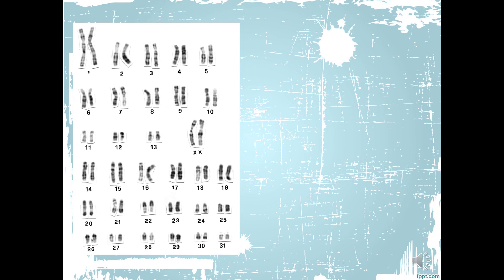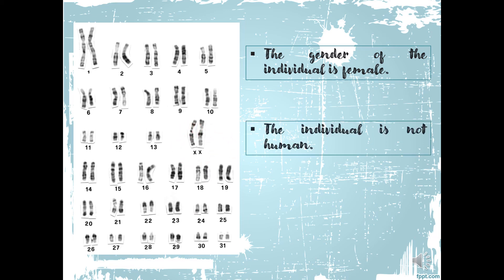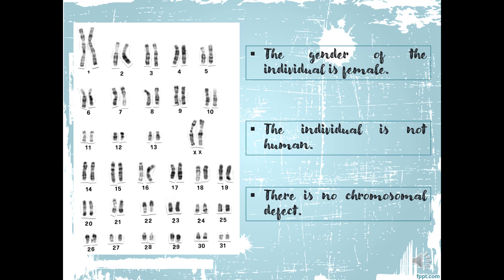Let us study the last karyotype. The gender of the individual is female because of sex chromosome XX. The individual is not human — why not human? Because there are 32 pairs of chromosomes. There is no chromosomal defect — you will not notice any missing, extra, or deleted parts of chromosomes. So there is no chromosomal defect in this specific karyotype. Since there is no chromosomal defect and it is not human, what organism could this be? The organism referred to in our last studied karyotype is the horse.